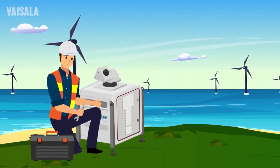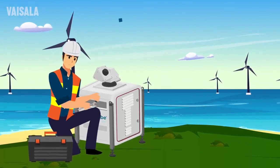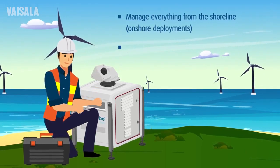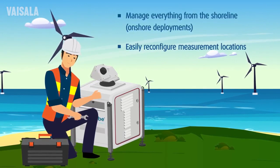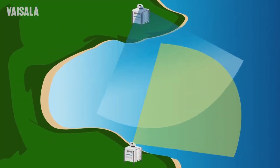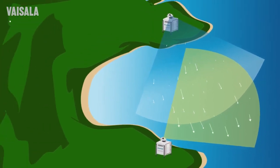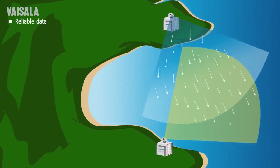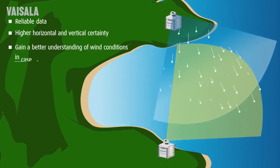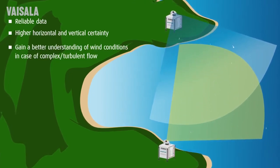Onshore installation and operation are far easier since everything is managed from the shoreline, while providing you with flexibility to reconfigure measurement locations as needed. The WindCube Scan Dual LiDAR Ready solution delivers constant accuracy for all wind sectors, higher horizontal and vertical certainty, and a better understanding of wind conditions in case of complex or turbulent flow.